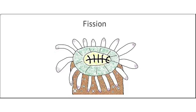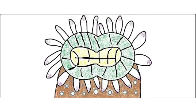This is known as fission. It is similar to cell division, but instead of one cell dividing, the entire multicellular organism divides into two smaller ones.